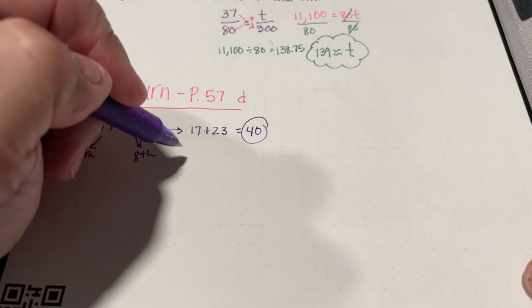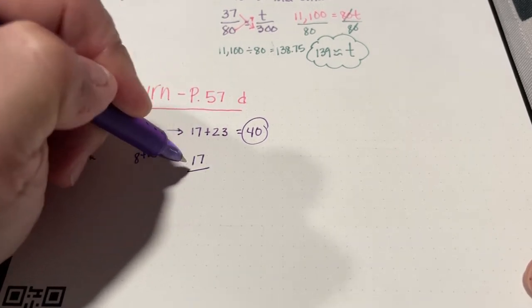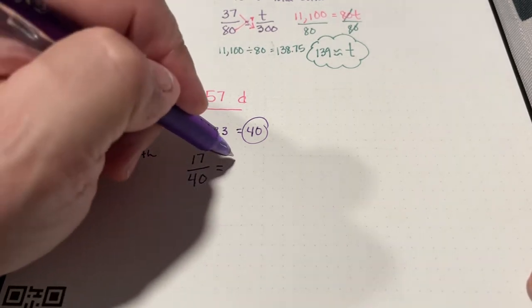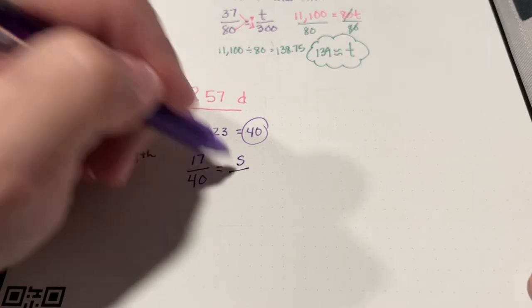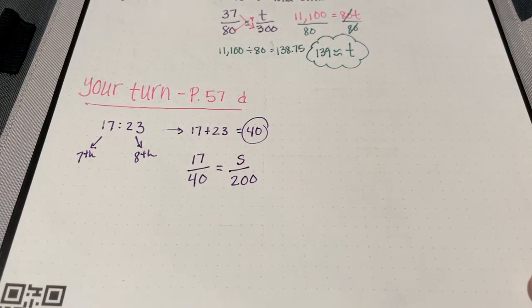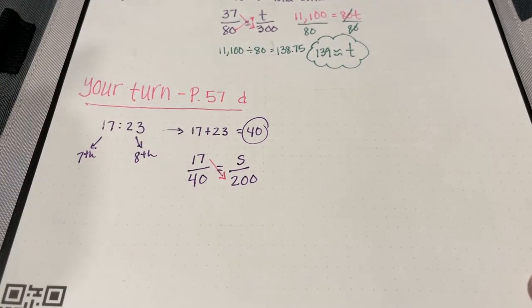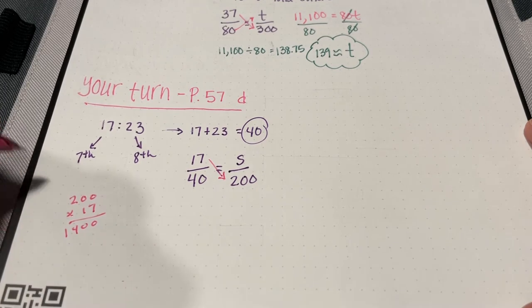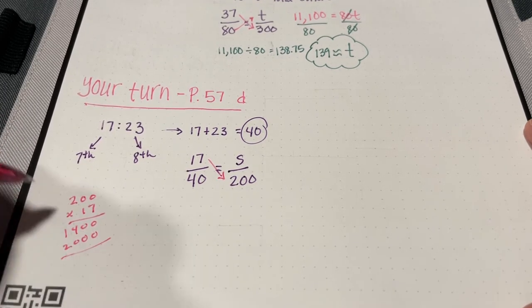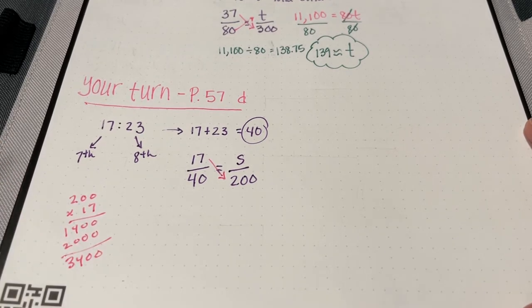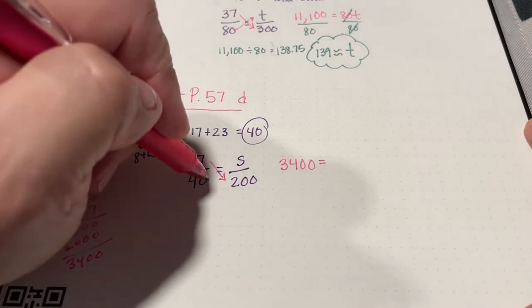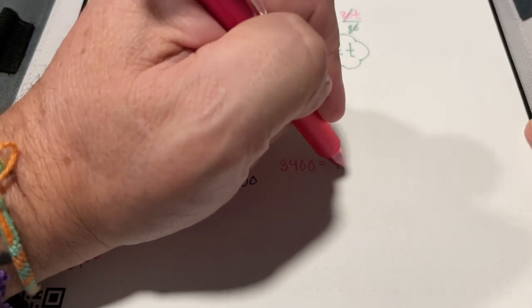Now I set this up as a proportion: 17 seventh graders out of 40 students. I want to find how many 7th graders — I'll use s — there would be out of 200 students. Cross products: 17 times 200 is 3,400, and that equals 40 times s, which is 40s.